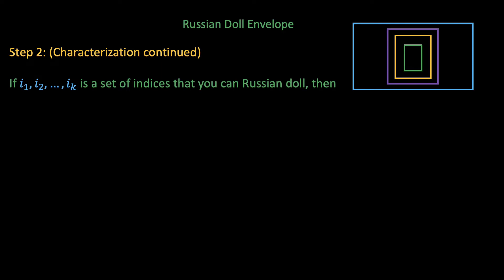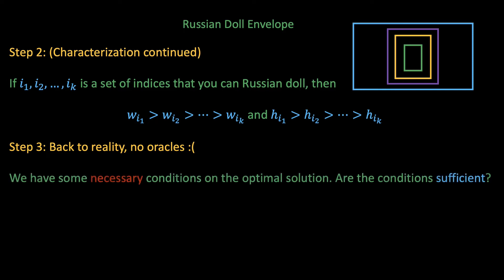What did we just show? Well, we showed that if there are k envelopes i1 to ik that fit inside each other, then it must be that their width and heights are in descending order. These are what we call necessary conditions. They are conditions that must apply to the optimal solution. Step 3 is to finally go back to our reality, where unfortunately there are no magical oracles to give you the optimal solution. However, by our imagination, we manage to prove some very important necessary conditions. The final step is to check if those necessary conditions are actually themselves sufficient.